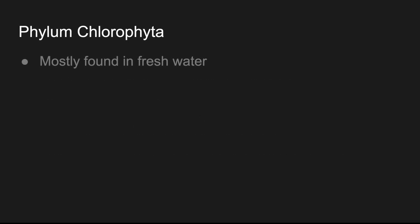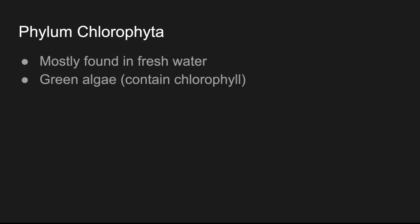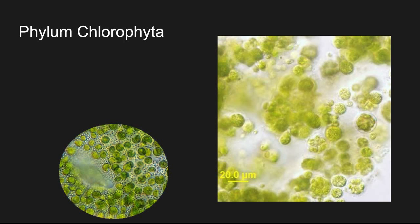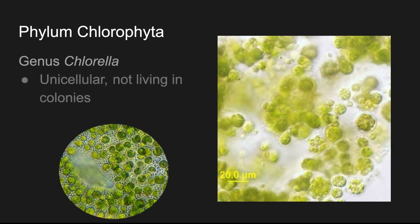We're going to talk about some specific phyla of algae. Here's phylum Chlorophyta. They are found mostly in fresh water and they are green algae, which means that they contain chlorophyll and their cell walls are made of cellulose. Here are some nice images of green algae Chlorophyta. Genus Chlorella are unicellular — they are not living in colonies, though it's not universal.